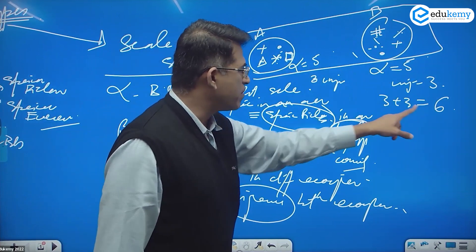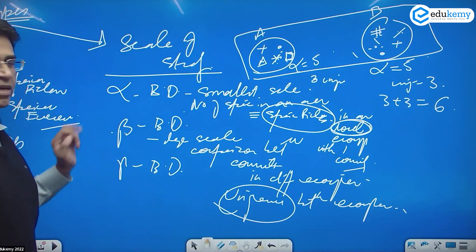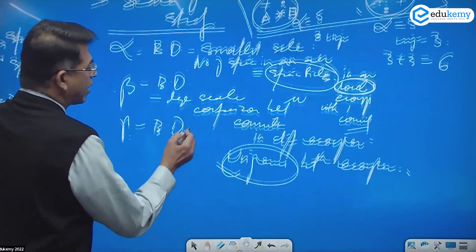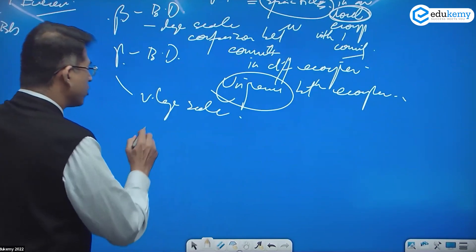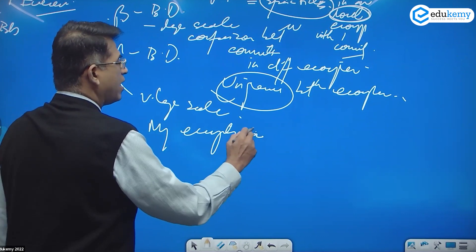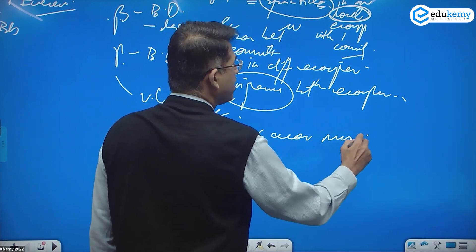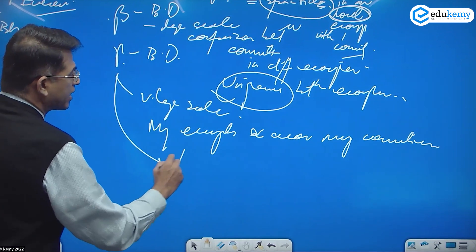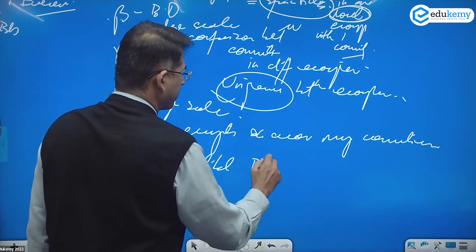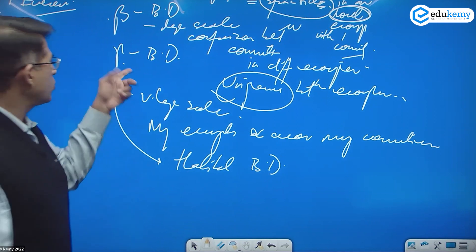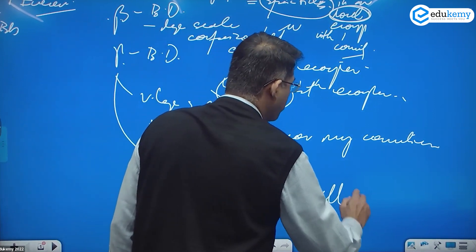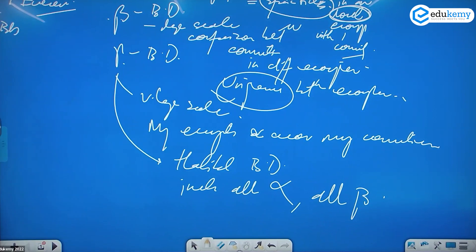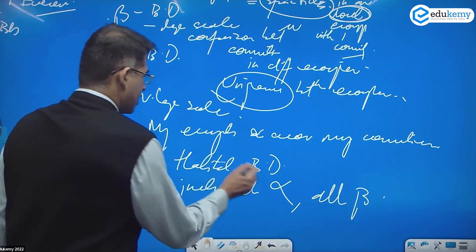And gamma biodiversity is at the very large scale. It includes many ecosystems and across many communities. This is something like the habitat biodiversity — a large habitat like a savanna habitat. It includes all the alpha of ecosystems and all the beta of ecosystems combined together in the larger habitat. Gamma biodiversity is the largest scale.